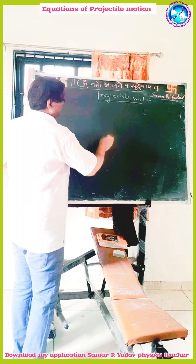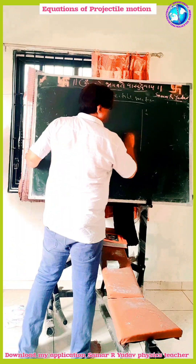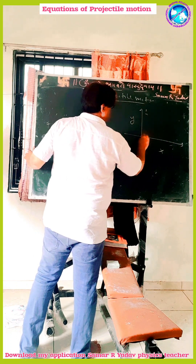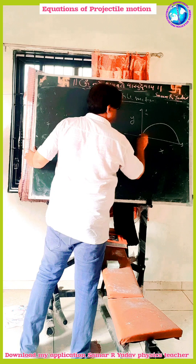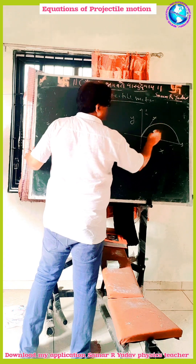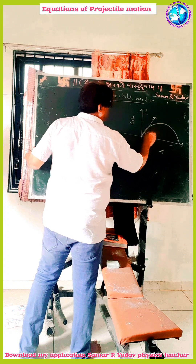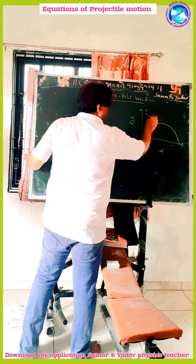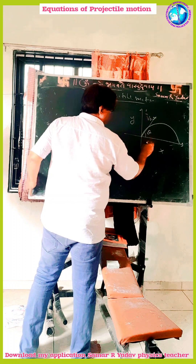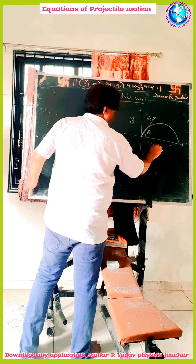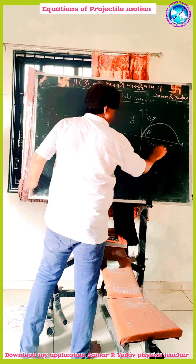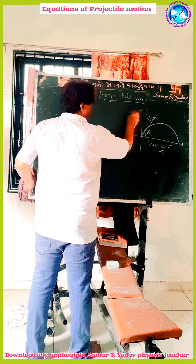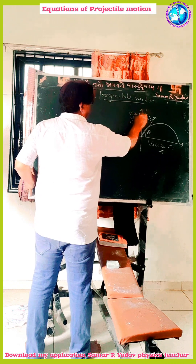Suppose this is the x-axis and this is the y-axis. The projectile is projected at an initial angle theta with initial velocity v0. This velocity has two components: v0 cos theta along the x-axis and v0 sin theta along the y-axis.